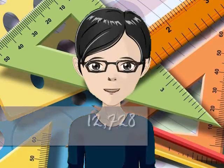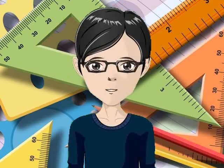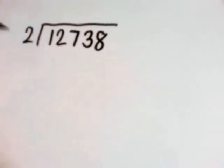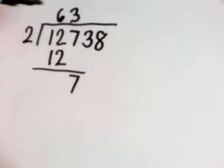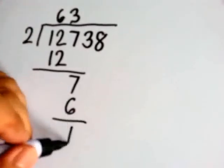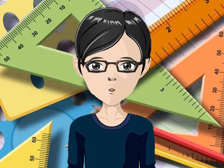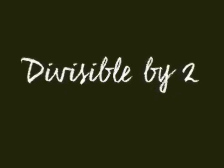What about 12,728? Is this divisible by 2? 12,728 is a big number. You can divide it by 2 to check if it's divisible by 2, but it will take some time. Medyo matagal kapag i-divide natin. But there is a shorter way — a shortcut. To quickly check if a number is divisible by 2, just check if the number is even. If it is, then it is divisible by 2.